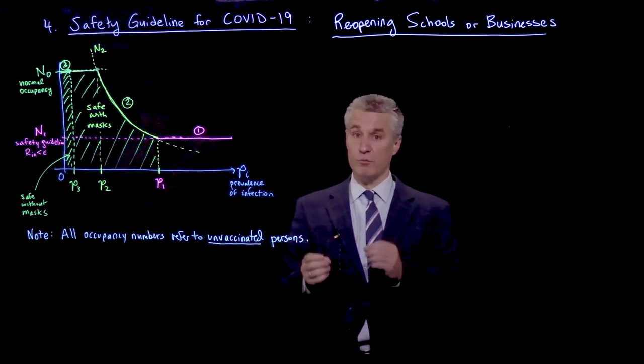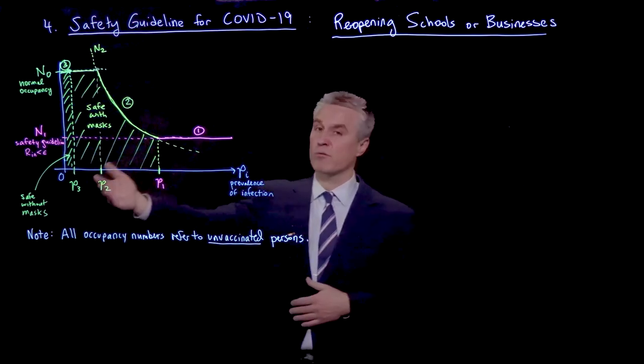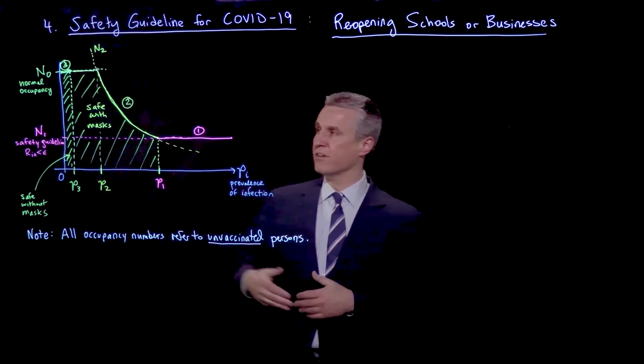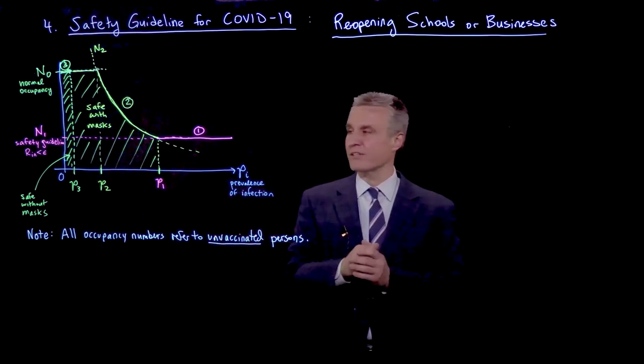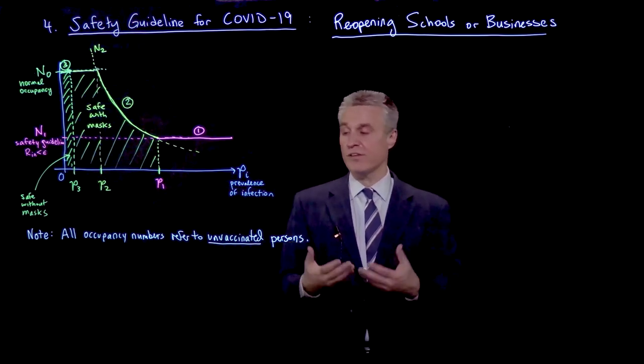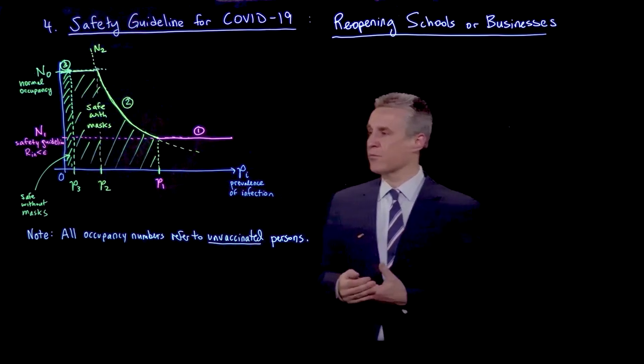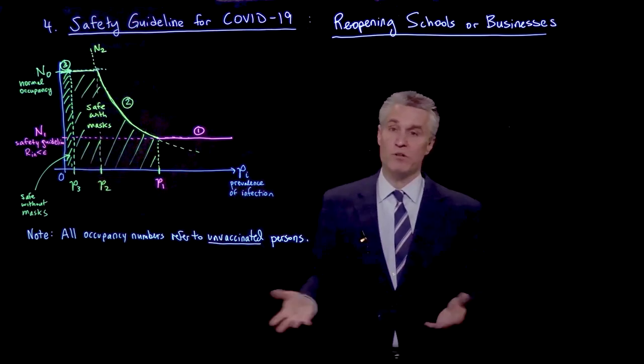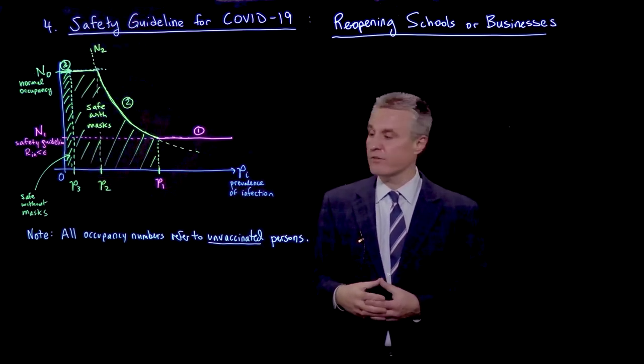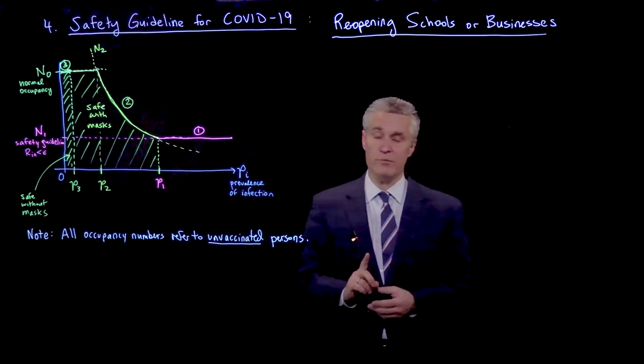But then we continue lowering the prevalence. There's a certain point where we get rid of those other precautions. So extra opening of windows, or more importantly, the dominant effect is the removal of the mask, because we know that's a significant factor. And then you might call that back to the real normal, actually, not the new normal, where we are back to full occupancy and really not taking any extra precautions. That's going to happen at a rather low prevalence, but we hope that that time will eventually come, and hopefully not so far in the future.